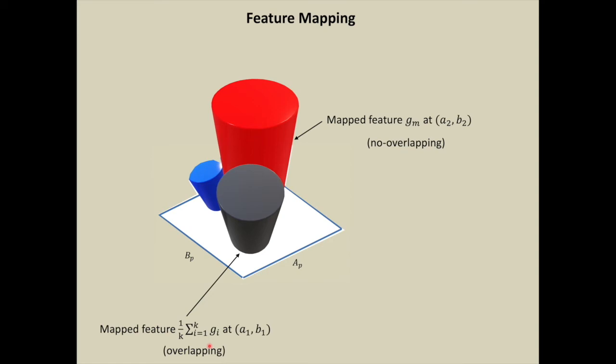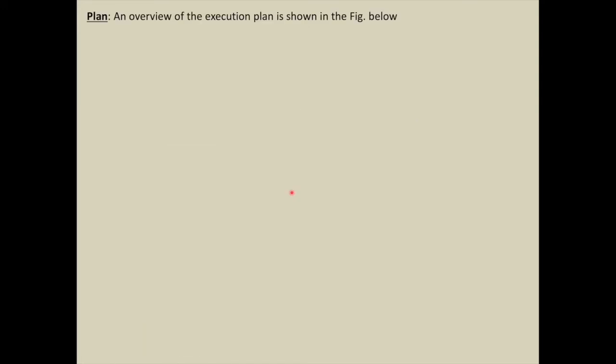After mapping feature values, you can see the pixel frame where red cylinder represents feature gm at location a2, b2, and the average k features at location a1, b1. The mapped features depict relative positioning of features on the pixel frame. In a local region, the frame is comprised of spatially coherent pixels - that is, similar information is shared by the pixels near each other.